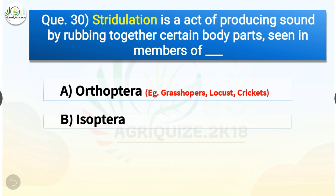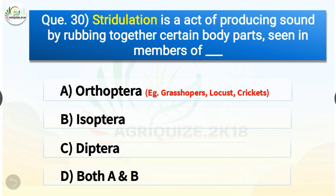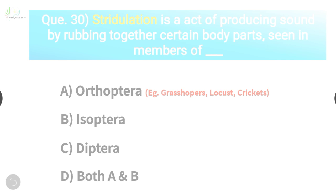Question number thirty: stridulation is an act of producing sound by rubbing together certain body parts, as seen in members of — options are Orthoptera, Isoptera, Diptera, or both A and B. The correct answer is option A, Orthoptera. Stridulation is seen in members of Orthoptera, which includes grasshoppers, locusts, and crickets.